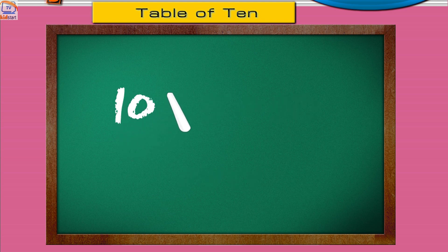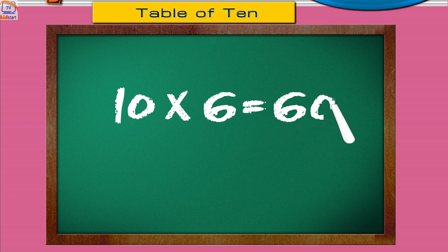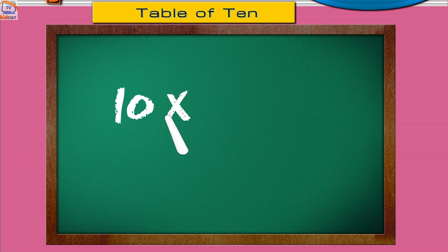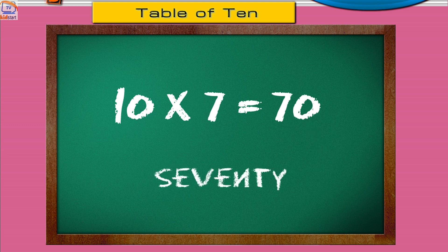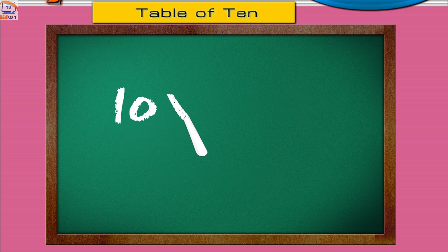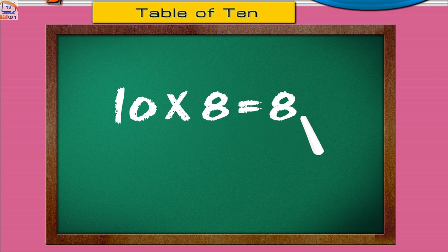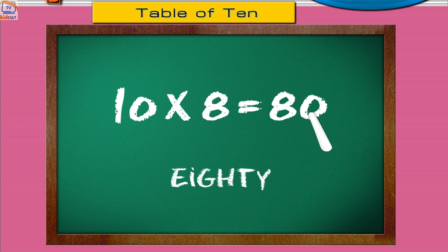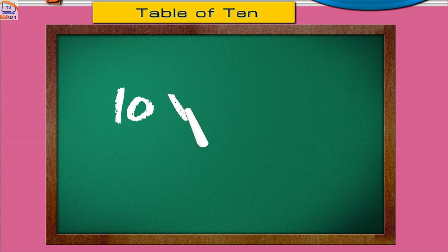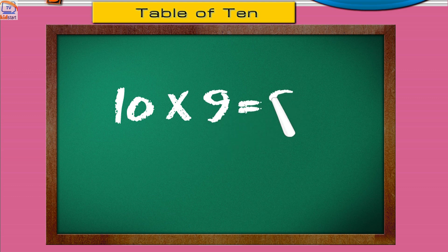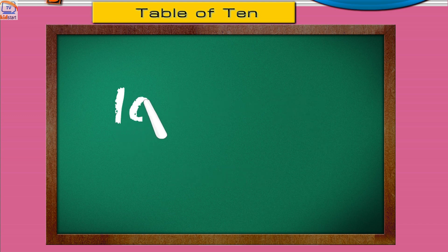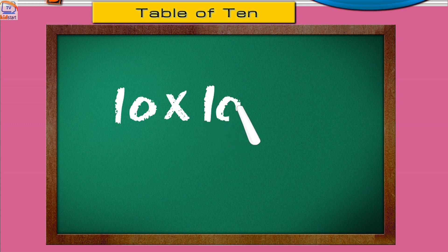Ten sixes are sixty. Ten sevens are seventy. Ten eights are eighty. Ten nines are ninety. Ten tens are one hundred.